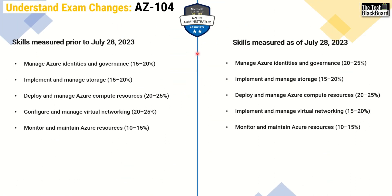Let's start understanding all the changes that have come up in AZ-104. On the left-hand side you see all the changes prior to July 28th, and on the right-hand side you see all the changes as of July 28th or post July 28th. To begin with, you can see that earlier we had five categories of skills measured — we still have five categories. The first one is Manage Azure Identities and Governance, exactly the same in the new syllabus as well, however the percentage has increased a little bit.